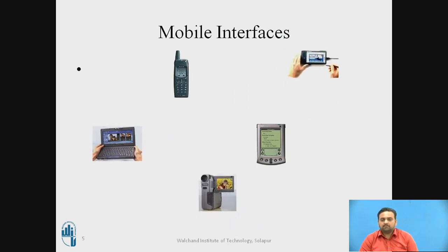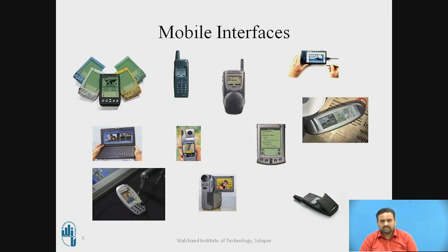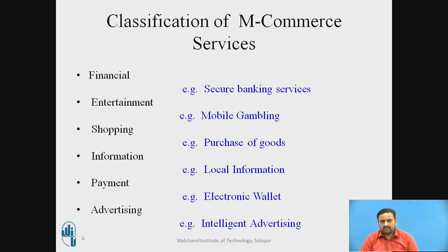We are going to see this diagram — mobile interfaces, a lot of interfaces and various devices are shown here. Next, the classification of M-commerce services. Basically they can be classified into different categories, but we are going to focus on the main six categories. The first is the financial category, which includes secure financial and banking services provided to the user.